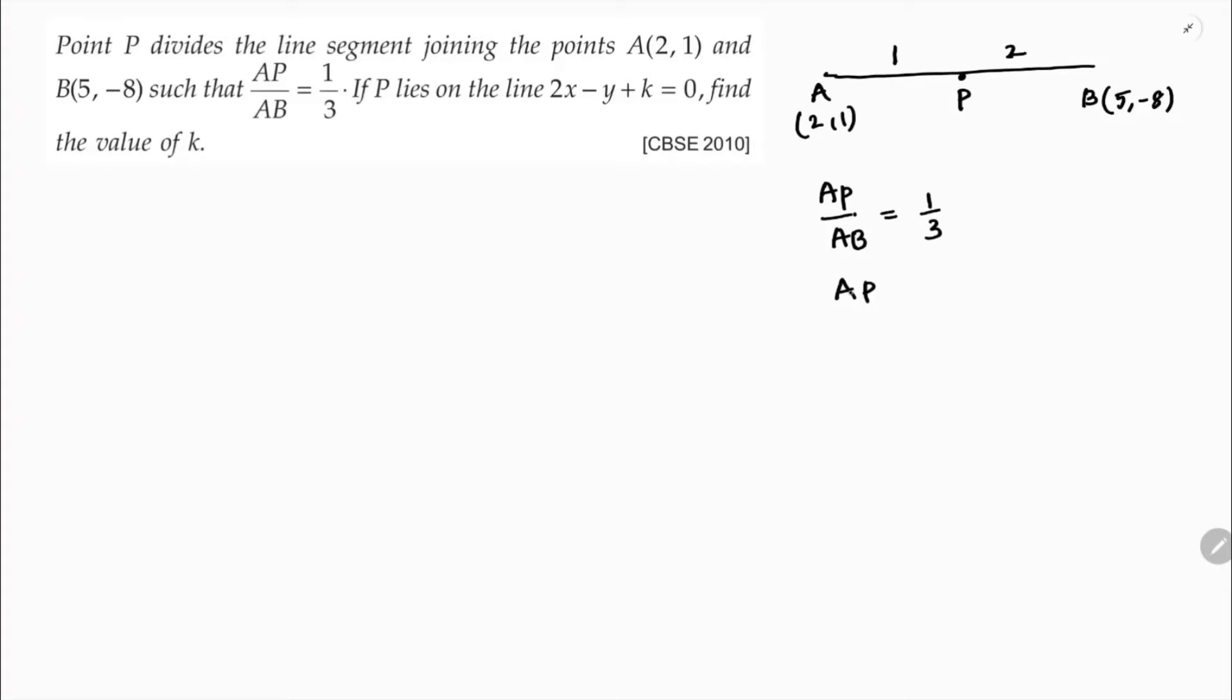For ratio AP by AB, AB you can write as AP plus PB equals 1 by 3. So AP equals 1 into AP plus PB.